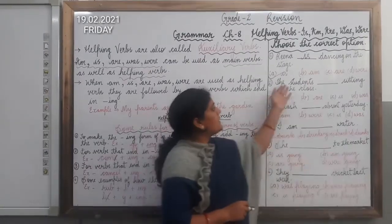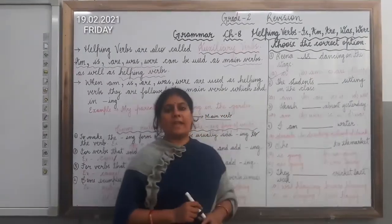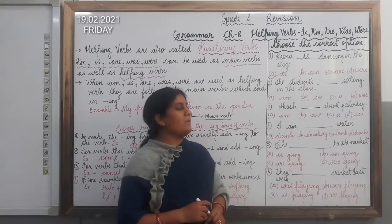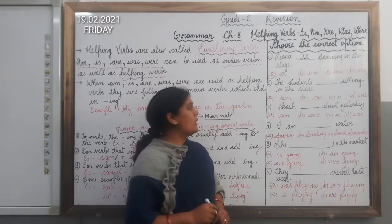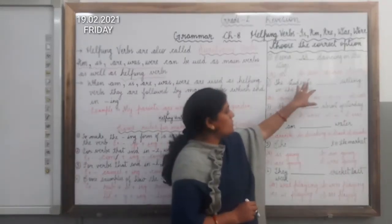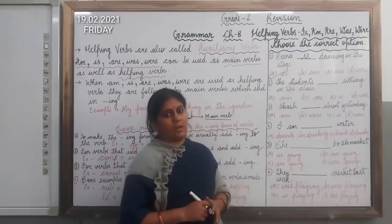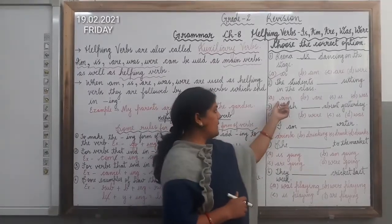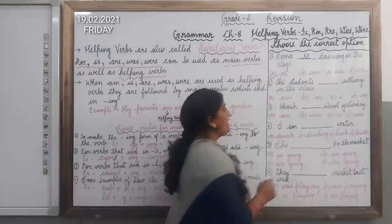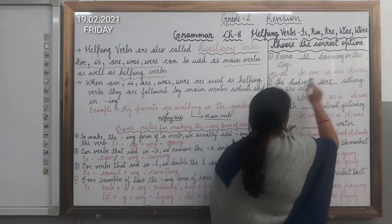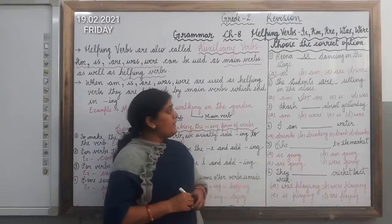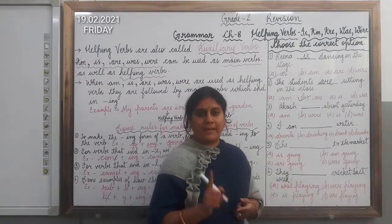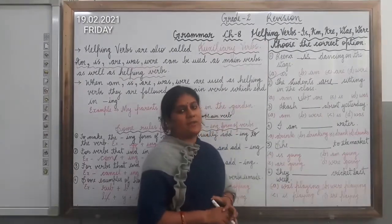Question number 2 is: The students ___ sitting in the class. First of all we have to see whether the sentence is in the present tense or in the past tense. Here we are talking about many students — the noun is plural. The sentence is in the present tense and we are talking about plural, so which helping verb will we use? Are, is, or was? Yes, we will use are. The sentence is: The students are sitting in the class. Are is always used for the plural noun.